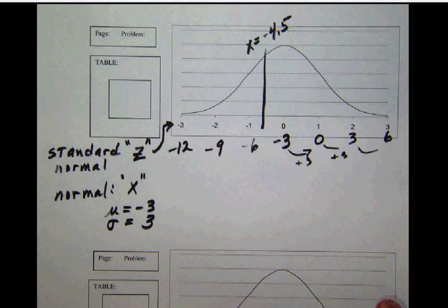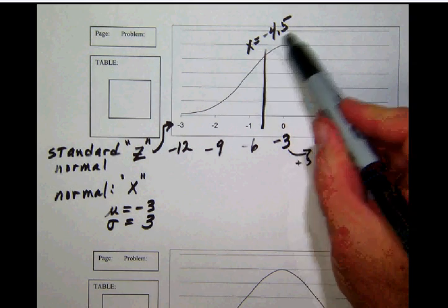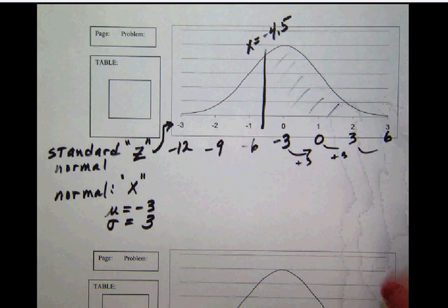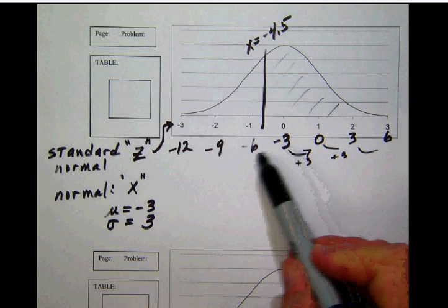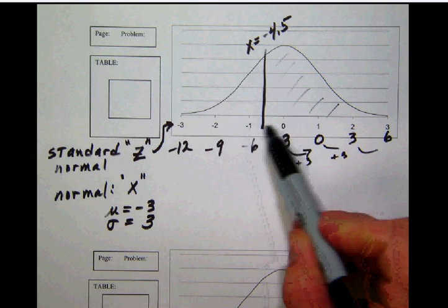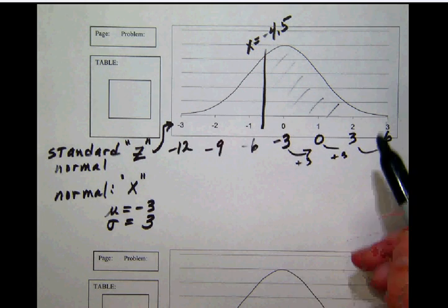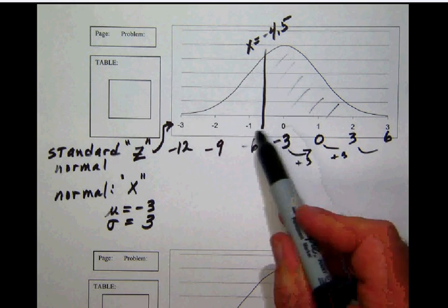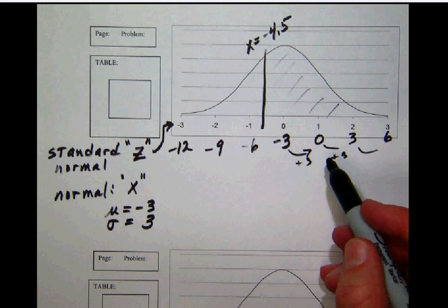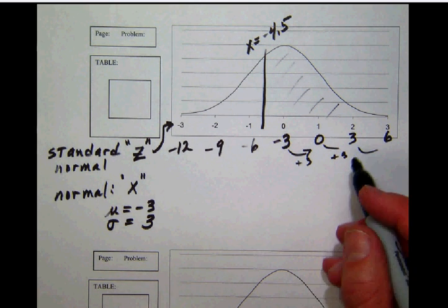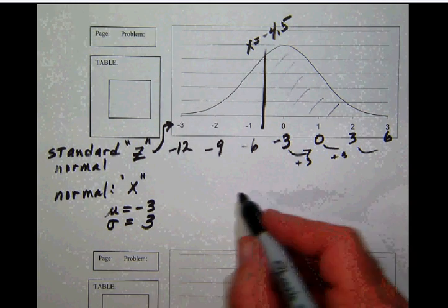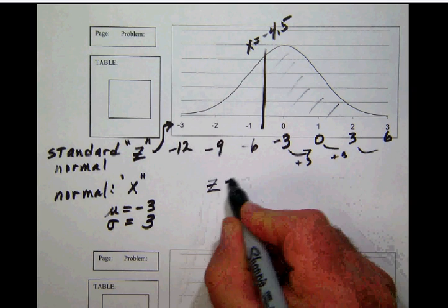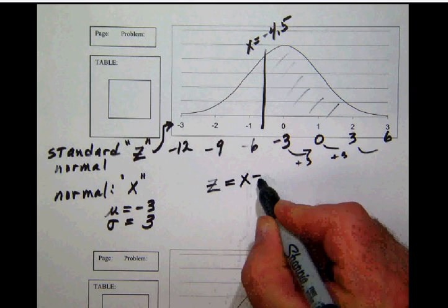What we want to do is convert this normal distribution score into a standard normal. Common sense tells us it's somewhere between 0 and -1, but let's use a formula to calculate that conversion. The formula is z = (x - μ) / σ.